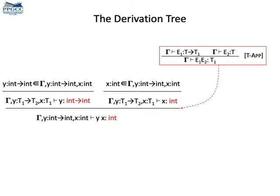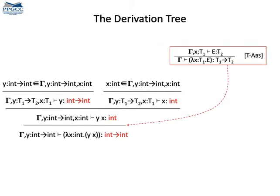And we can use this fact that Y applied onto X has type int to infer the type of a lambda expression. The lambda expression is lambda of X is Y applied onto X. The type of this expression is int arrow int due to rule t abs. Go ahead and stop the video. Try to read what rule t abs says.